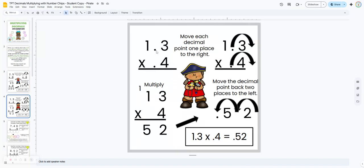Here's an example of when they're moving the decimal point twice. So when they get their answer, they're going to move it back two places to the left.